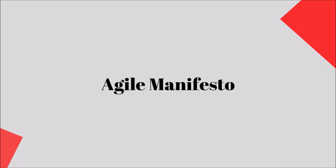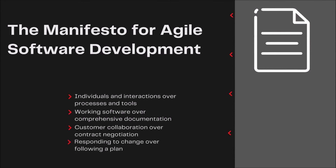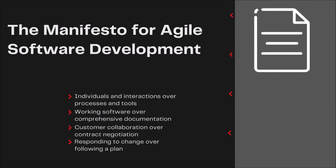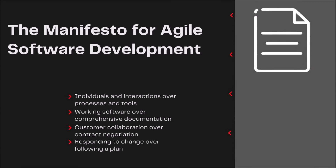The Manifesto for Agile Methodology, laid out in 12 principles, established that collaborators valued the following: Human Interactions over Processes and Tools; Working Software over Comprehensive Documentation; Customer Collaboration over Contract Negotiation; and Adaptability over Following a Plan. For more information on the Manifesto and its collaborators, visit the JustTechMeIt website, where you will find a blog post on Agile Methodology along with reference links. The website is provided in the description below and at the end of this video.